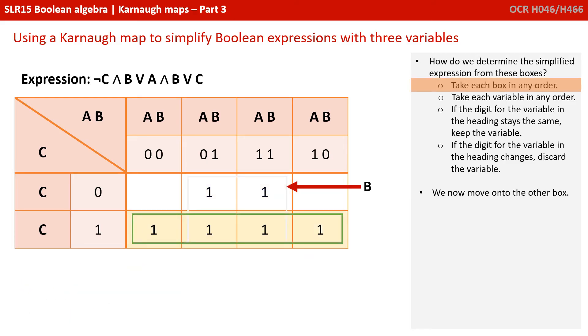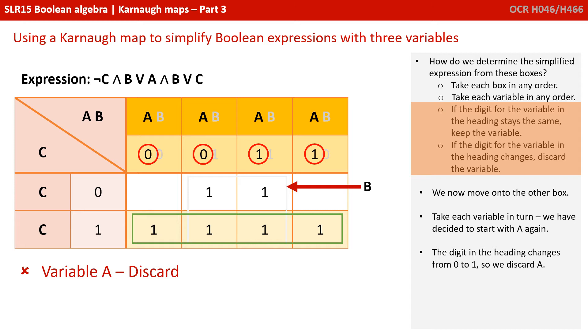Okay, so we move on to the other box because there were two boxes here. And we take each variable in any order. So, again, we're going to start with A. Well, it's easy to see here that A is changing. The heading appears in all four parts of this large rectangular horizontal box. And the A goes from 0 to 0 to 1 to 1. It's changing. So, we discard A.